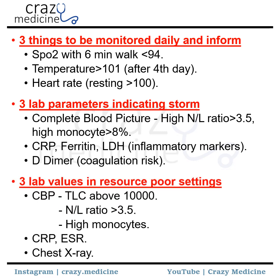Then, three lab values in resource-poor settings: total count, neutrophil-to-lymphocyte ratio, and monocytes. Then CRP, ESR, and chest X-ray. This can be done where higher facilities for inflammatory markers or CT scan are not available.